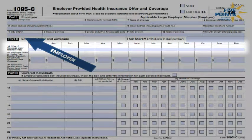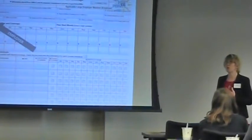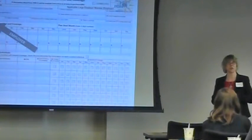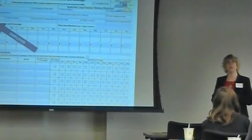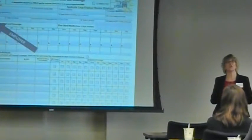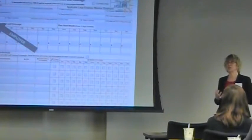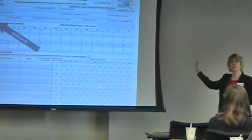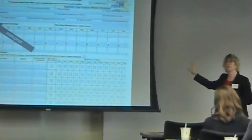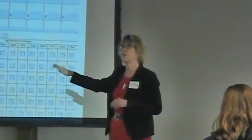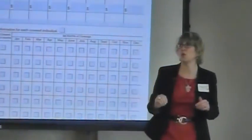The 1095-C is a calendar year form. Things may change in the middle of the year — contributions, offerings, or whether people are taking or not taking coverage. But the form is still a calendar year, so if your plan year changes in the middle of the year and you change your contribution or your offering requirements, things can change in the middle of the form.